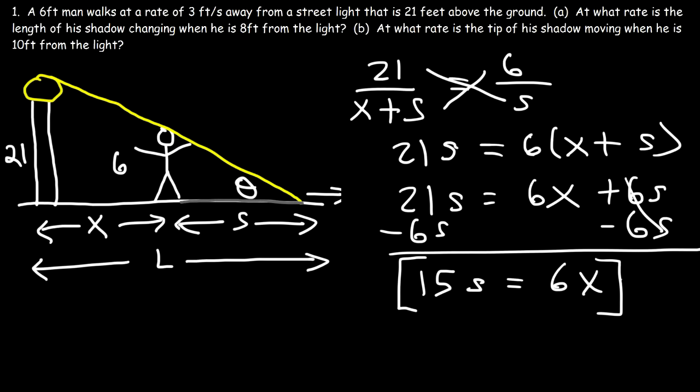Now once you get to this part of the equation, we can perform implicit differentiation. Let's find the derivative of both sides of the equation with respect to time. So the derivative of 15S is going to be 15 times the derivative of S, which is 1, times dS/dt, based on the constant multiple rule. And the derivative of 6X is going to be 6 times 1, times dX/dt.